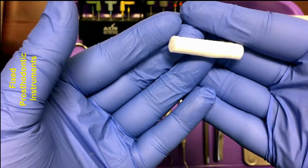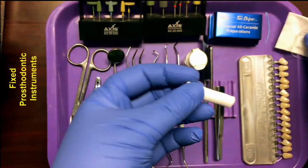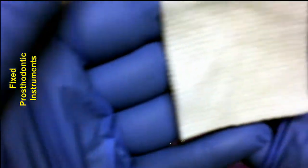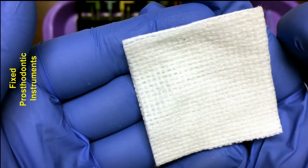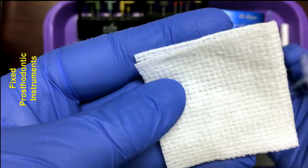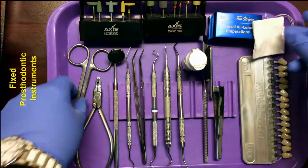Your crown and bridge scissors will be used to trim excess material off a temporary restoration. So if you give that patient a provisional while they're waiting for the final restoration to be made, you're going to use your crown and bridge scissors to trim any excess material.